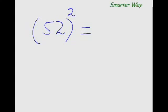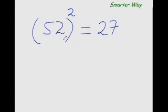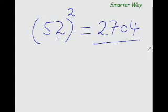Let me do it the smarter way. So 25 plus 2 is 27, and the square of 2 is 4, so 04. This is my answer.